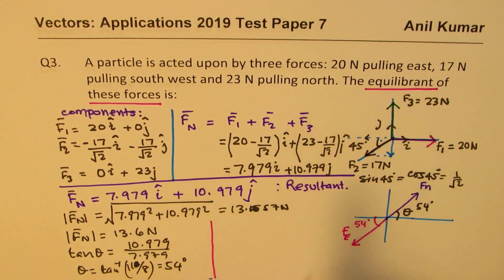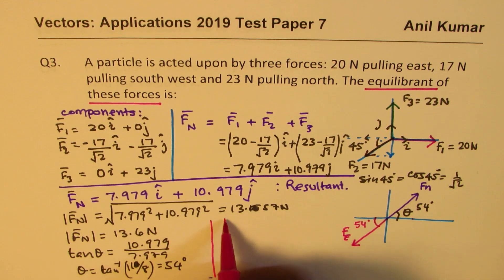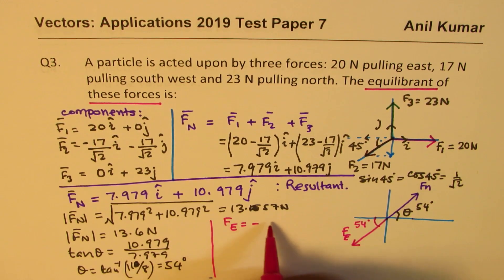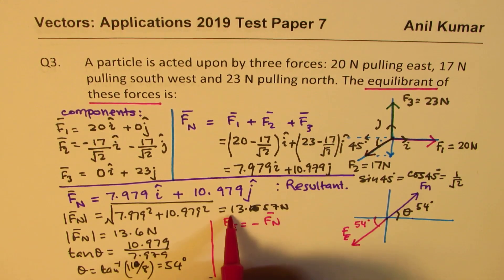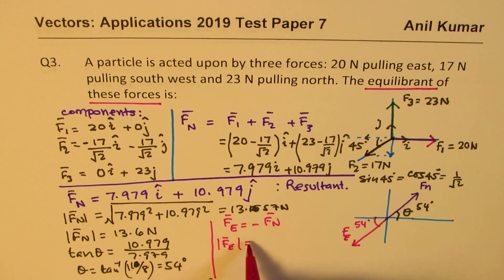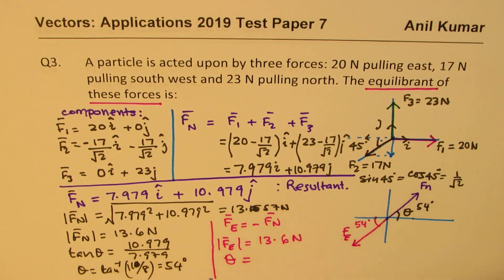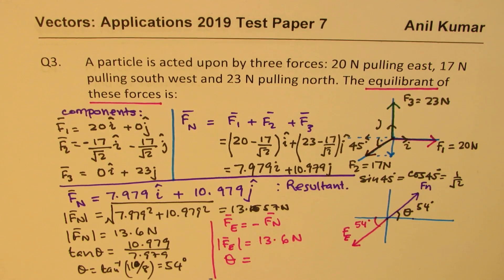Now tell me, what should be the equilibrium force? So as far as the vector value is concerned, it will be negative of f of n. So equilibrium force will be negative of f of n. That is clear. The magnitude of this equilibrium force, however, because magnitude is always a positive quantity, will be 13.6 Newtons. And the angle theta will be what? So the angle normally should be given from the north.